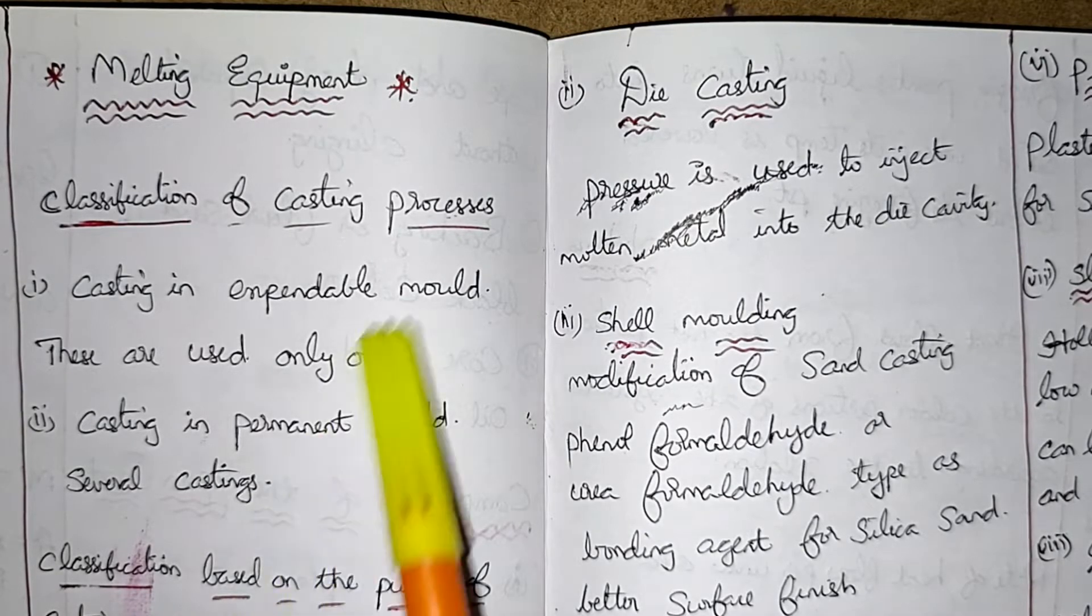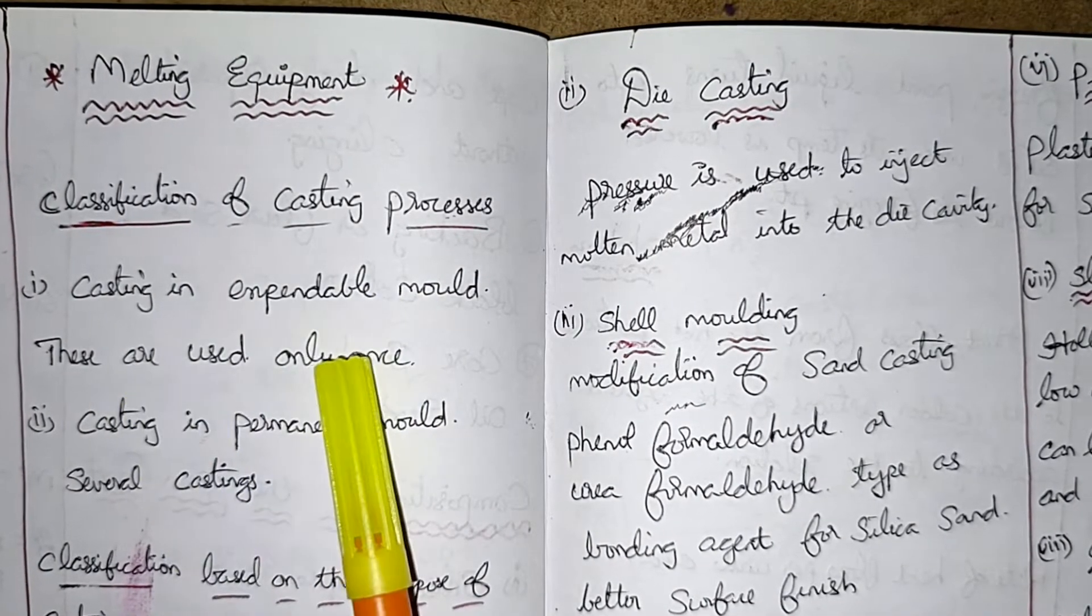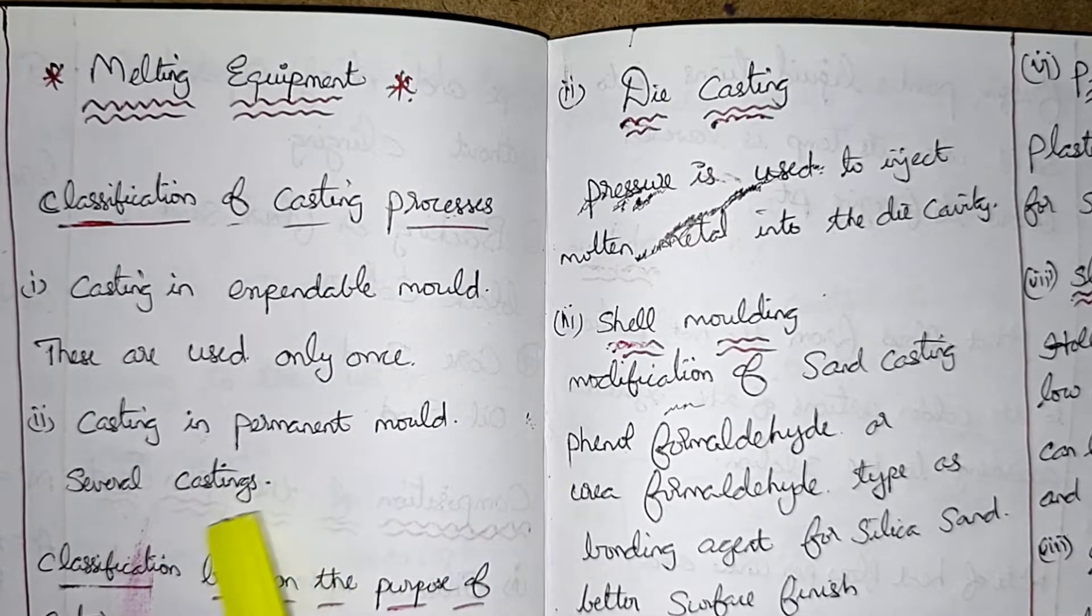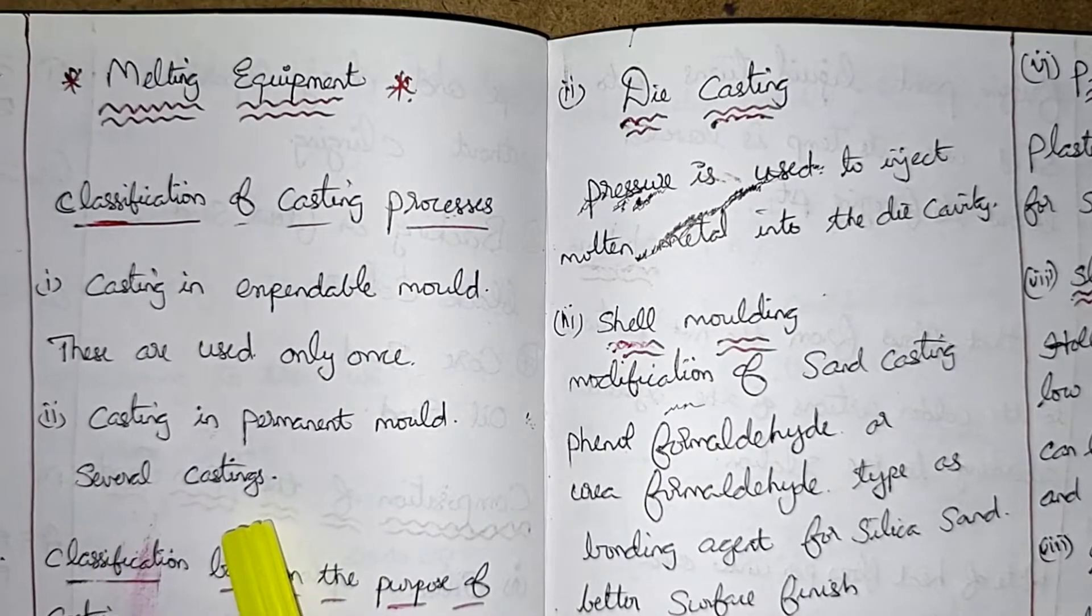Now we will see classification of casting process. Casting in expendable mold - they are used only once. Casting in permanent mold - several castings are used.